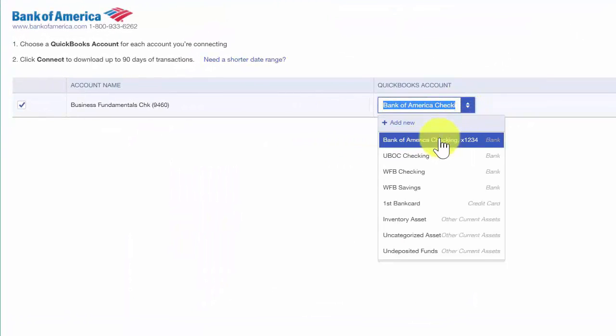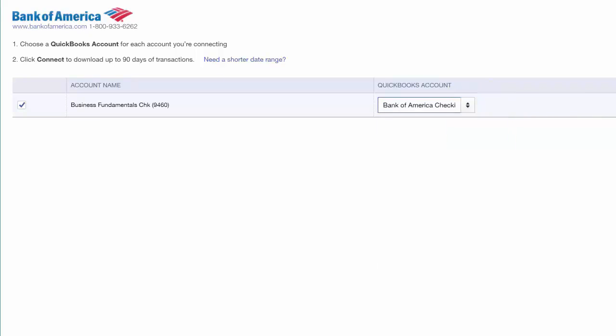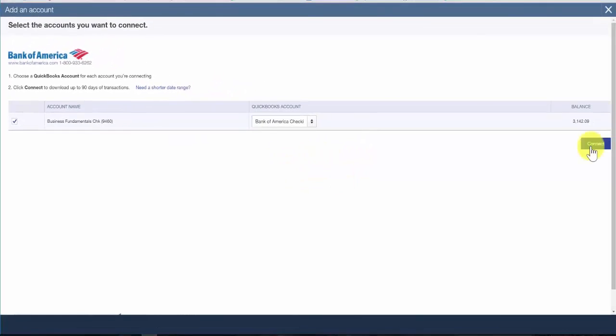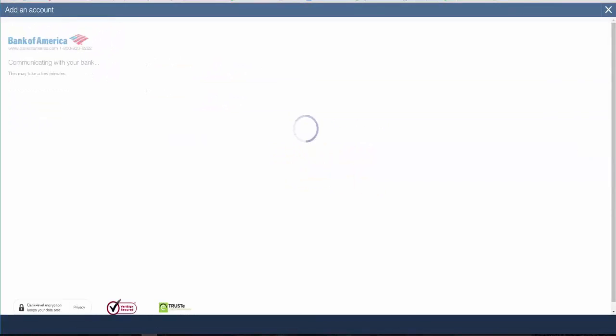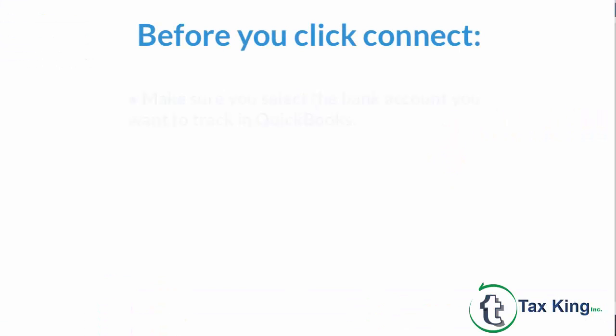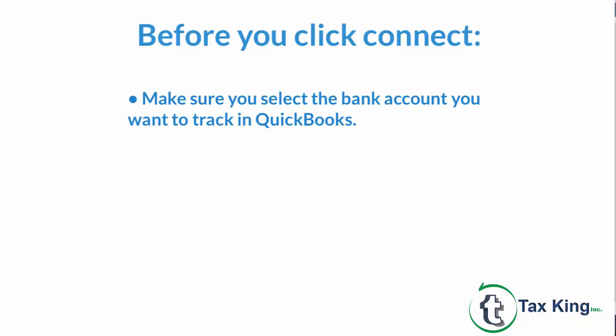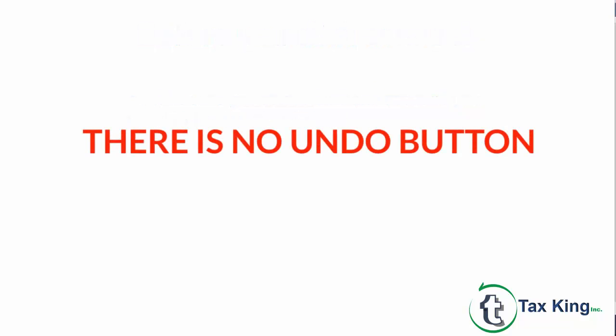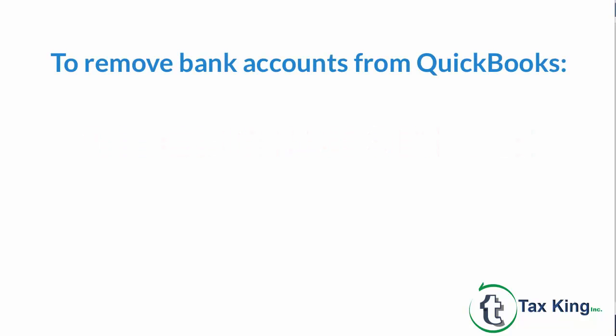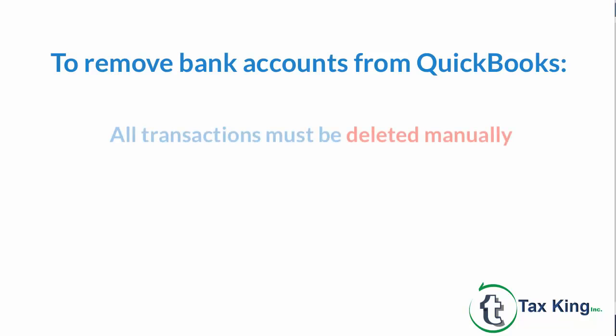Back on the next screen, you can see our new Bank of America checking account set up in QuickBooks and connected to our Bank of America checking account. Before you click the Connect button, always double check to make sure you do not select any accounts you do not want to track in QuickBooks — for example, personal accounts. Once you click Connect, all transactions will be downloaded into QuickBooks. Unfortunately, there is no automatic undo button. If you accidentally selected an account you do not want connected, you will need to manually delete all of those transactions before you can delete the account from QuickBooks.